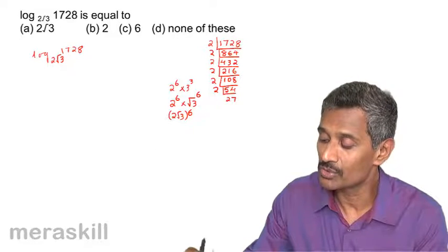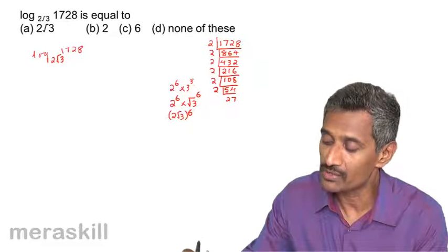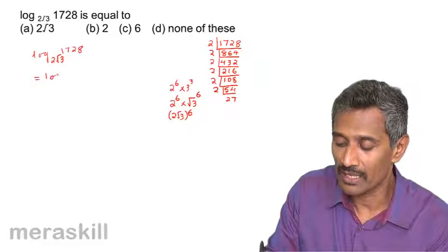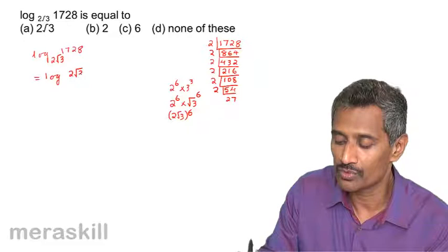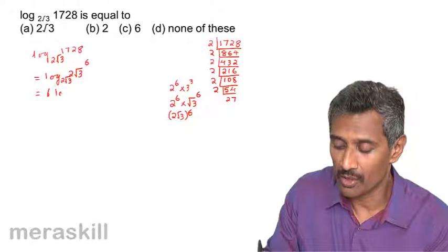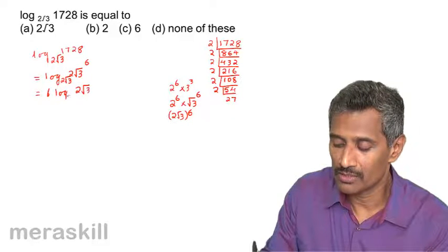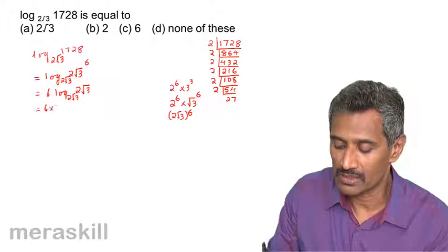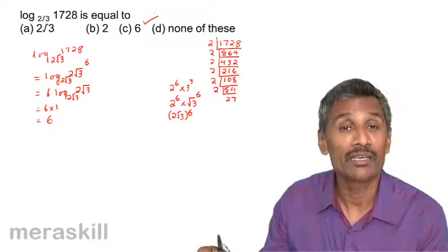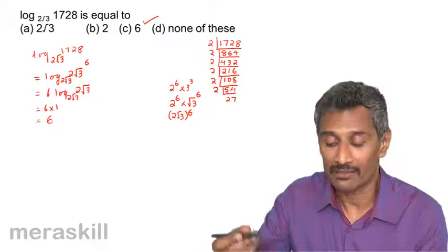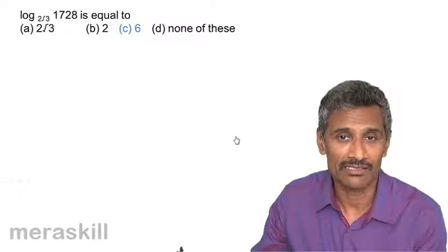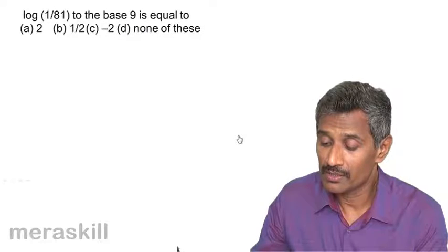Now 3³ can be written as (√3)⁶, so 1728 = 2⁶ × (√3)⁶ = (2√3)⁶. So log of (2√3)⁶ to the base 2√3 equals 6 log (2√3) to the base 2√3, which is 6 into 1, giving us 6.